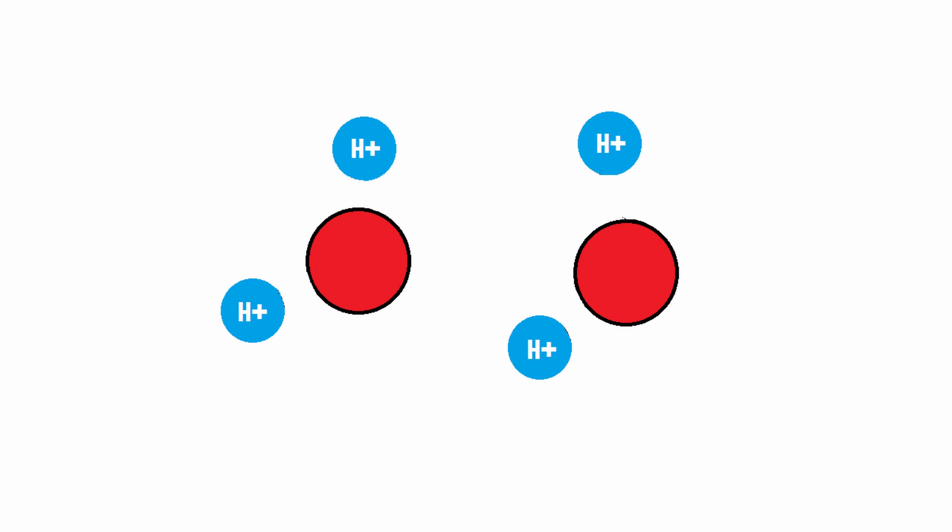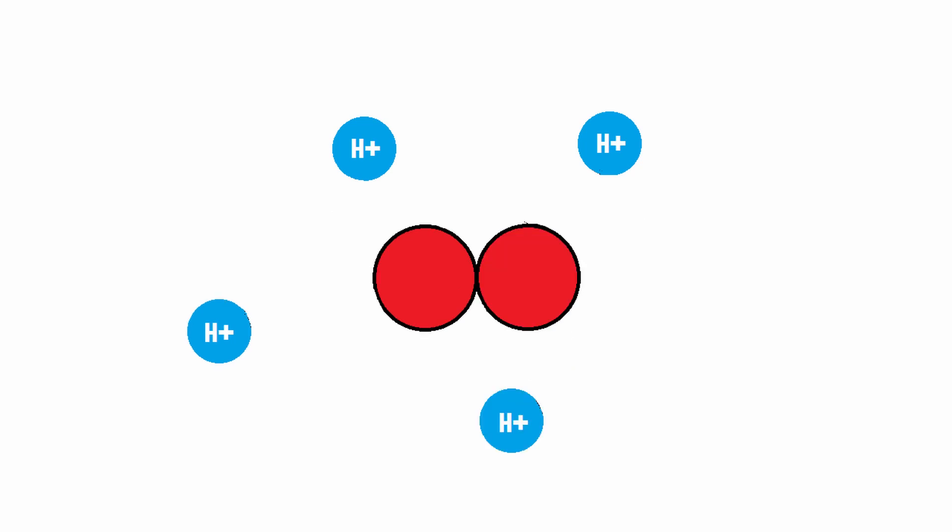But at the same time those hydrogen atoms are no longer full hydrogen atoms, because they've just lost their electrons. Those electrons have been stolen by that battery that is sucking up the electrons. So those hydrogen atoms are now hydrogen ions, or H+. The oxygen atoms that are left behind combine to form O2, so oxygen gas, and those are the bubbles that get formed on the positive side of this electrolyzer.